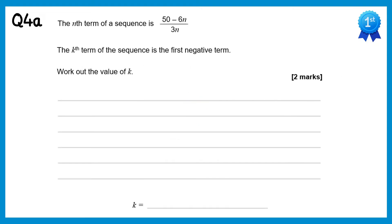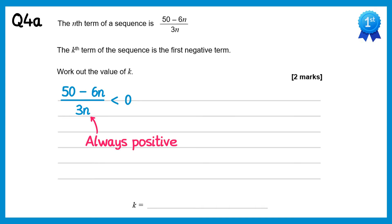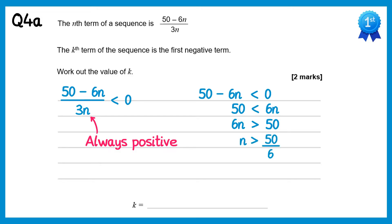For this sequence we need to find the first value that's negative — remember negative numbers are just less than 0, so we want the nth term to be less than 0. Since n is always positive, 3n is always positive, so the numerator 50 minus 6n must be negative. So 50 minus 6n is less than 0. Adding 6n and rearranging gives 6n is greater than 50, so n is greater than 50 over 6, which is 25 over 3, or 8 and one third. Since k must be an integer, k equals 9.